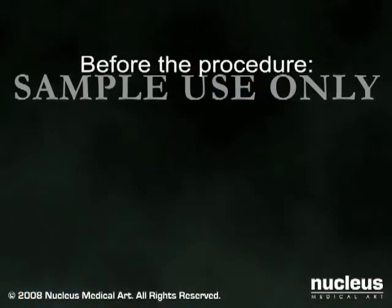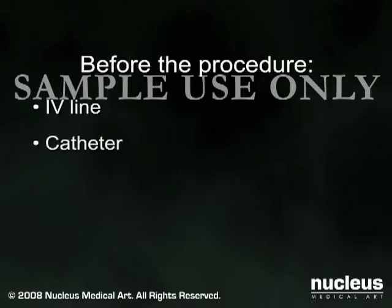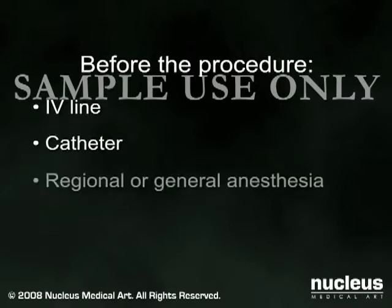When a cesarean section becomes necessary, you will be prepped for surgery. If not already in place, an intravenous line will be started and a catheter will be inserted into your bladder to drain urine. In the operating room, you will be given anesthesia. In most cases, a spinal anesthetic is administered to numb the lower portion of your body. Sometimes, however, a general anesthetic will be used.